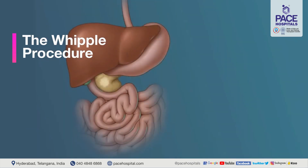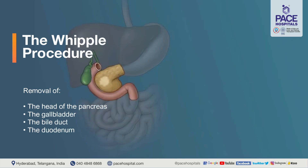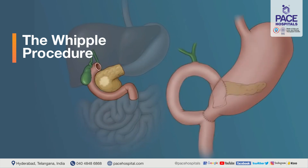In summary, the Whipple's operation for cancer of the head of the pancreas or peri-ampullary tumors involves removal of the head of the pancreas, the gallbladder, the bile duct, the duodenum, and the first part of the intestine. After the surgery, we form three new connections — one of the pancreas, one of the bile duct, and one of the stomach — to complete the operation and restore continuity.